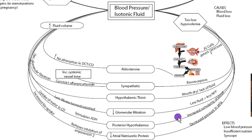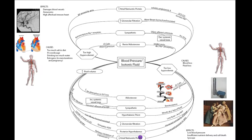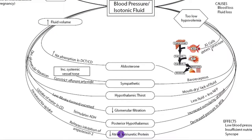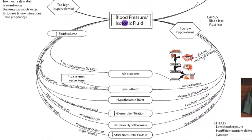The hypothalamus stimulates the posterior pituitary, which stimulates the release of ADH — antidiuretic hormone. ADH goes to the collecting duct and increases the reabsorption of water. ANP, or atrial natriuretic protein, is released by the heart in response to high blood pressure. If there's decreased pressure in the atria, it stops releasing as much ANP, which releases inhibition on angiotensin II, allowing sodium to be reabsorbed. Reabsorbing sodium also increases fluid volume by taking up water, restoring blood pressure and isotonic fluid to homeostasis.